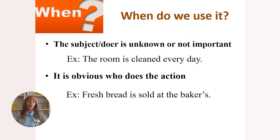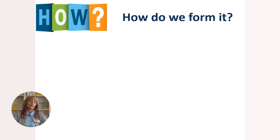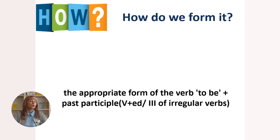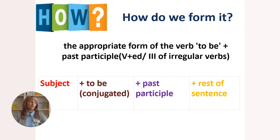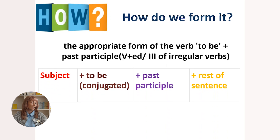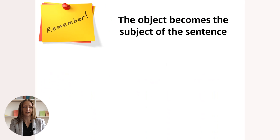Now let's see how to form passive voice. It is formed with the appropriate form of the verb 'to be' plus the past participle — with the ending '-ed' or the third form of irregular verbs. The structure is: subject + to be (conjugated) + past participle + rest of the sentence. One key thing to remember when transforming an active sentence into passive is that the object becomes the subject.